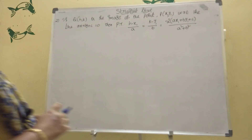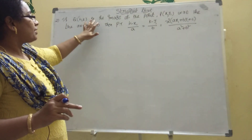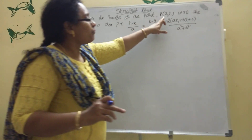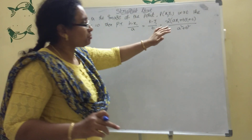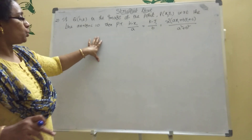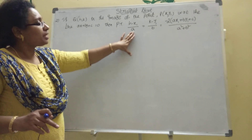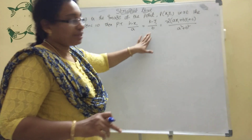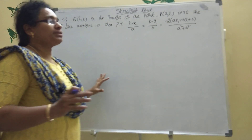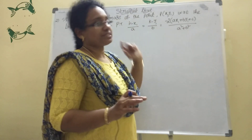Now I am explaining the Image theorem. Q(h, k) is the image of point P(x₁, y₁) with respect to the line ax + by + c = 0. We need to prove: (h − x₁)/a = (k − y₁)/b = −2(ax₁ + by₁ + c)/(a² + b²). The difference from the foot of perpendicular is the factor of 2.